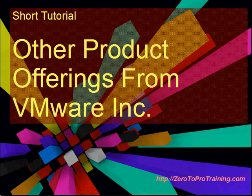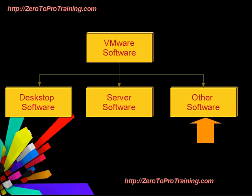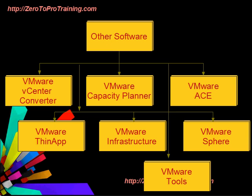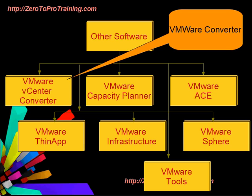Hello, welcome to zero to pro training. In the previous session we discussed desktop and server software offered by VMware Incorporated. In this short tutorial we will talk about other software offered by VMware Incorporated. Other product offerings include VMware vCenter Converter, VMware Capacity Planner, VMware ACE, VMware ThinApp, VMware Infrastructure, VMware vSphere, and VMware Tools.